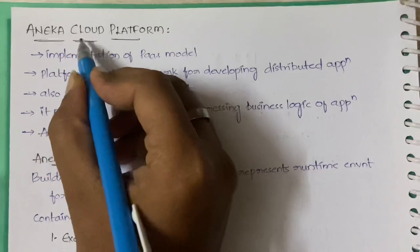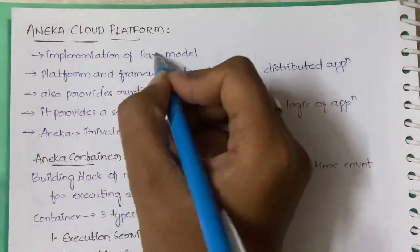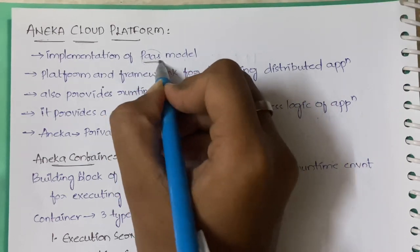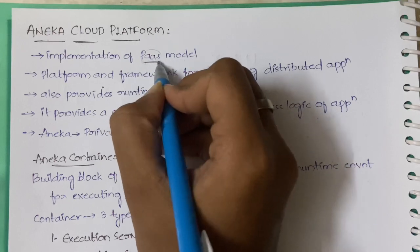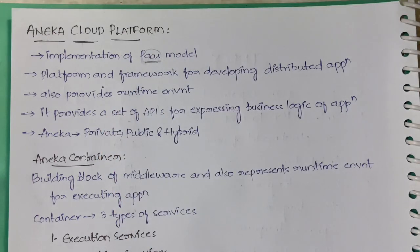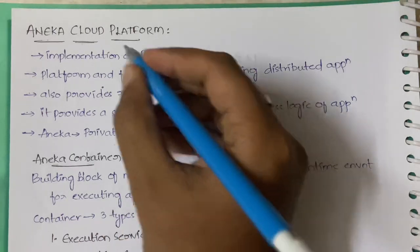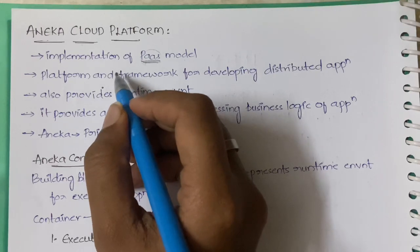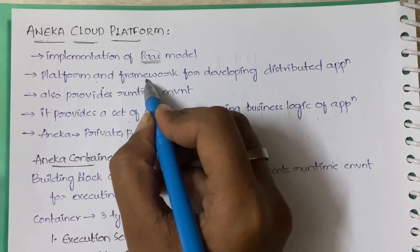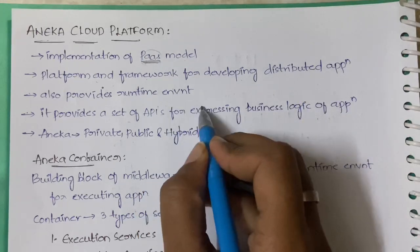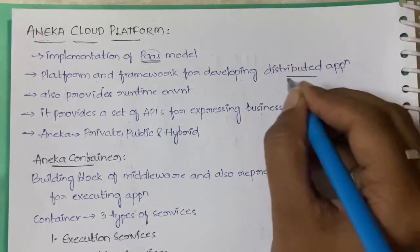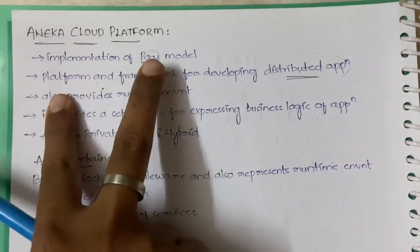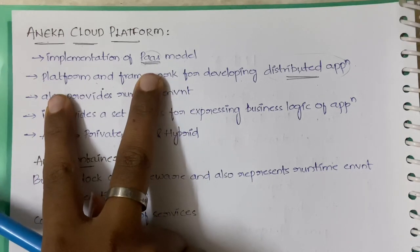The Aneka cloud platform is an implementation of the PaaS model — Platform as a Service. We also have IaaS, which is Infrastructure as a Service, but Aneka is specifically an implementation of the PaaS model. It is a platform and also a framework for developing distributed applications on the cloud.